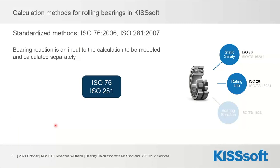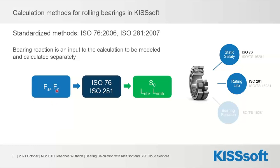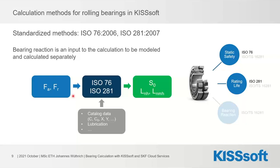To summarize those two basic standards: they always take axial and radial bearing force as primary input and calculate static safety and rating life. Some catalog data including lubrication factors is also required. This also describes a limitation — we need the bearing force already available, meaning in a shaft calculation we need to model that reaction force. The best approach within KISSsoft is to use ISO TS 16281 for that purpose.